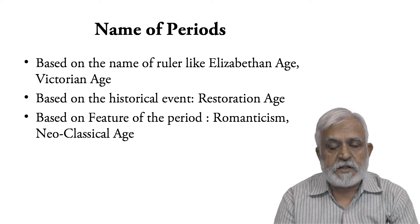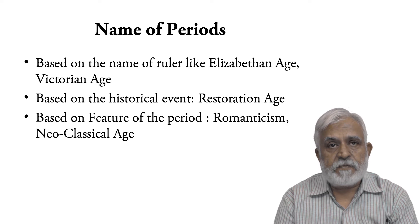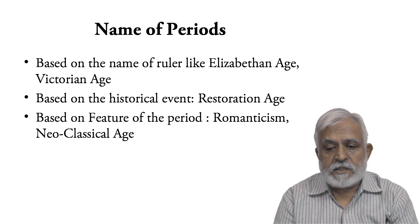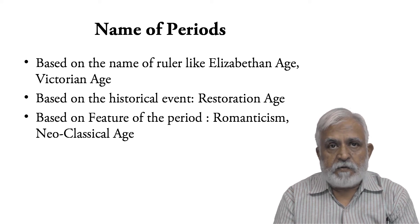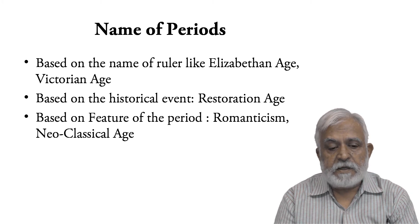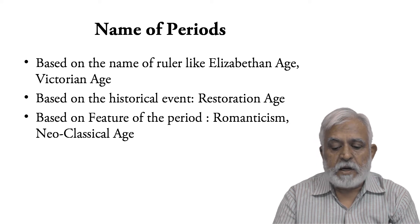The periods may also be based on some historical event, as in the History of English Literature there is a period known as the Restoration Age, which came to be known as such because monarchy was restored back in England after a gap of 12 years in 1660. The title of a period may also be based on some feature of that period, like Romanticism and the Neoclassical Age.